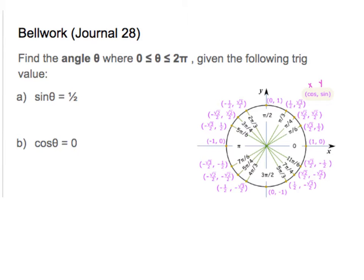Sine is 1/2 here at pi over 6, so the y here is 1/2. And then over here sine is also 1/2 at 5 pi over 6. I don't see any other positive y values of 1/2, so those are the only two angles between 0 and 2 pi: pi over 6 and 5 pi over 6.